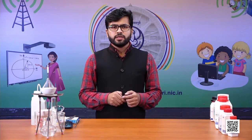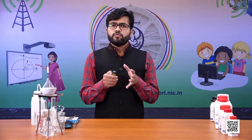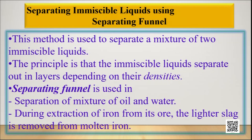Moving on to the next, how can we separate a mixture of two immiscible liquids — that is, kerosene oil and water? Immiscible liquids are liquids which do not mix with each other; they form a heterogeneous mixture. These two liquids are immiscible because their densities are different, and as they have different densities, they will form different layers. They can be separated using a technique called the separating funnel.